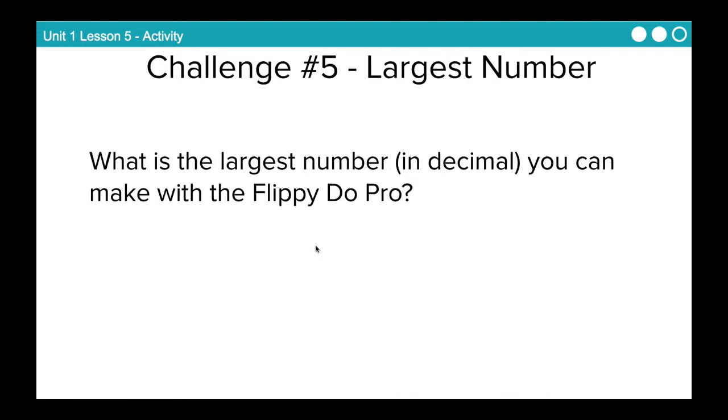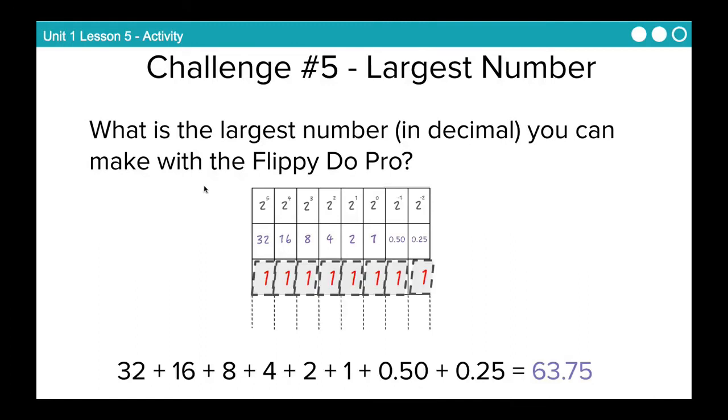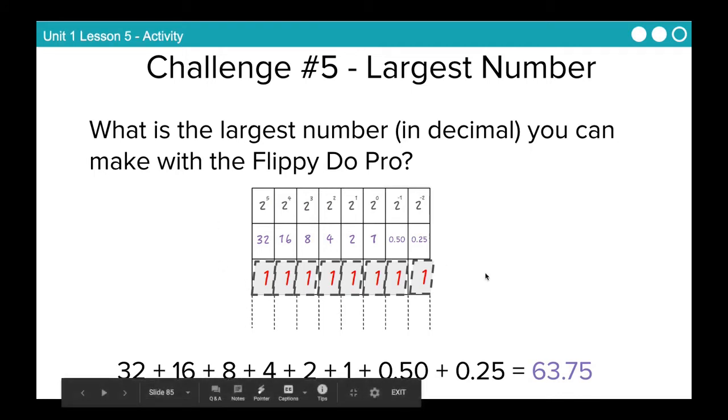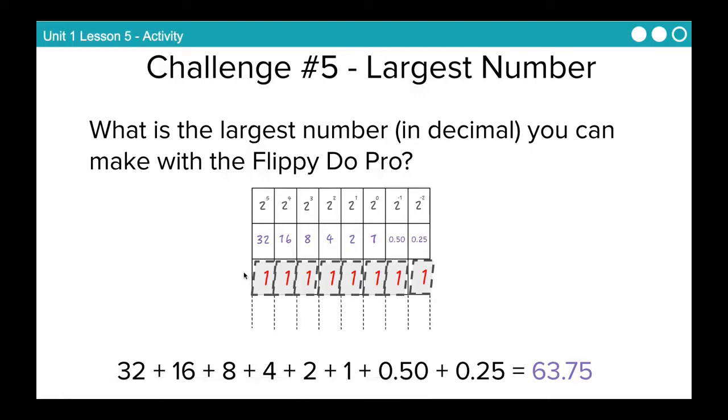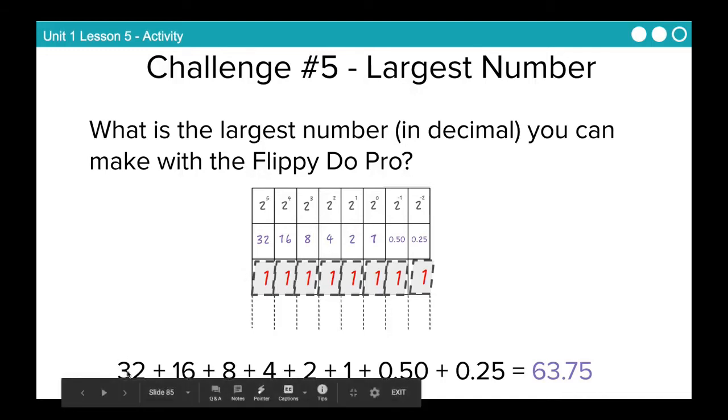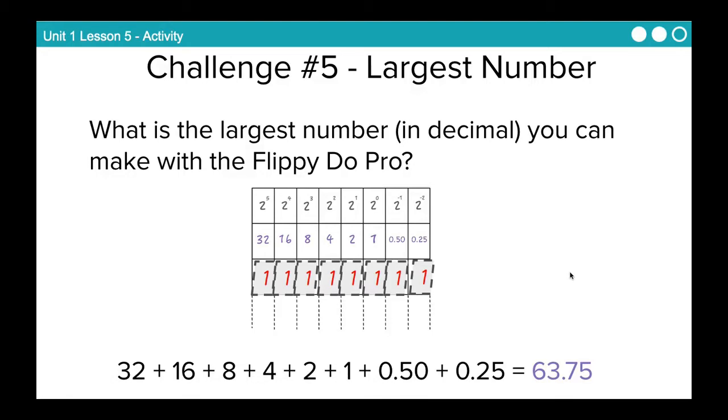Challenge number 5. And again, record the answer to this in your journal. What is the largest number in decimal that you can make with the Flippy-Doo Pro? Pause the video and answer the question and then come back. So the largest number in decimal you can make with the Flippy-Doo Pro, or with any Flippy-Doo, is whatever number is added when you flip up all the ones. So if you flipped up all the ones and your binary number was 1111-1111, and you added those values together, you should get 63.75. So that is the max amount that we can hit before we hit an overflow error.